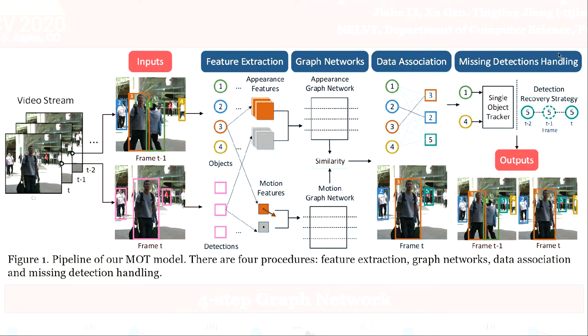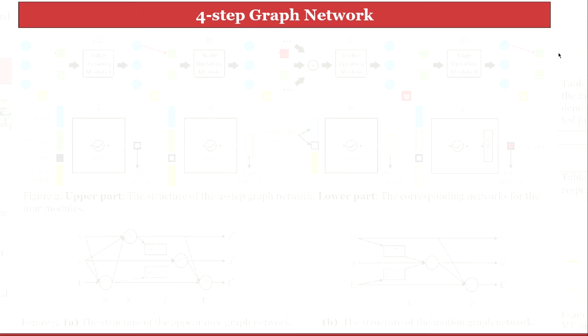For computing the final similarity, the weighted strategy is used. Next, the Hungarian algorithm is used to output the associations between the objects and detections. Finally, a single object tracker and linear motion model are applied to handle missing detections.